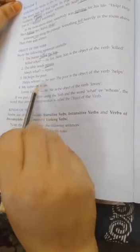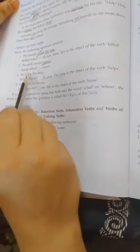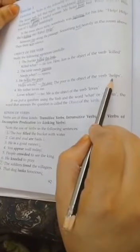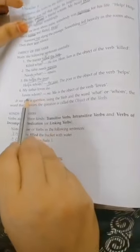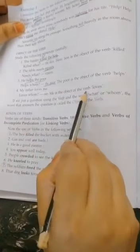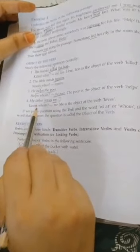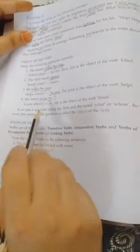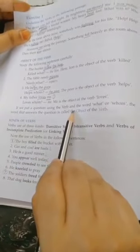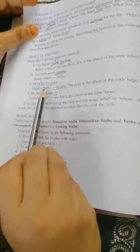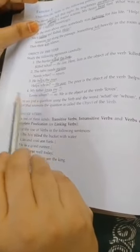'He helps the poor'—helps whom? The poor. 'The poor' is the object of the verb 'helps'. 'My father loves me'—loves whom? Me. 'Me' is the object of verb 'loves'. If we put a question using the verb and the word 'what' or 'whom', the word that answers the question is called the object of the verb.